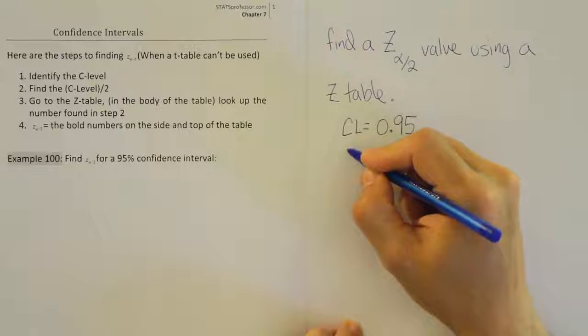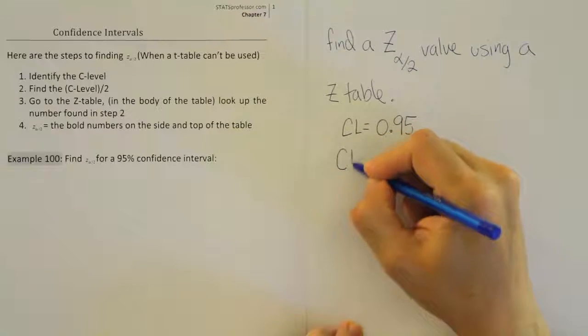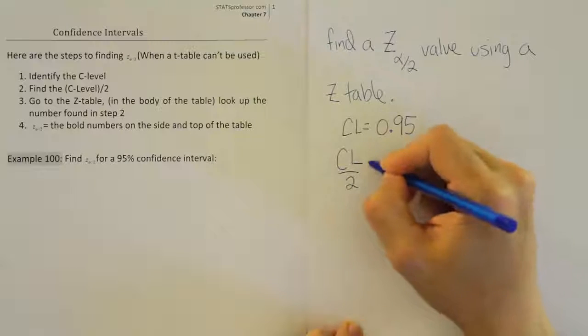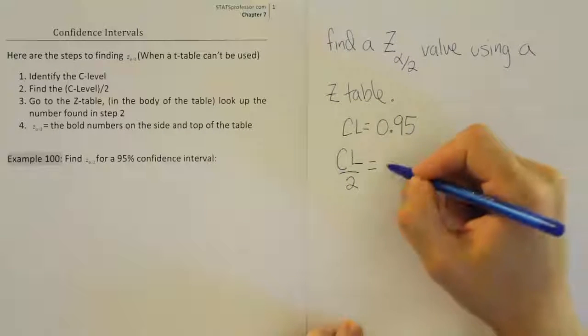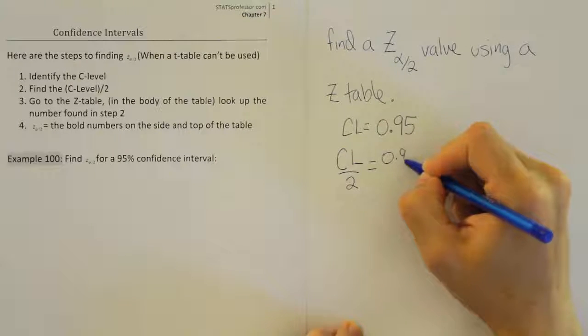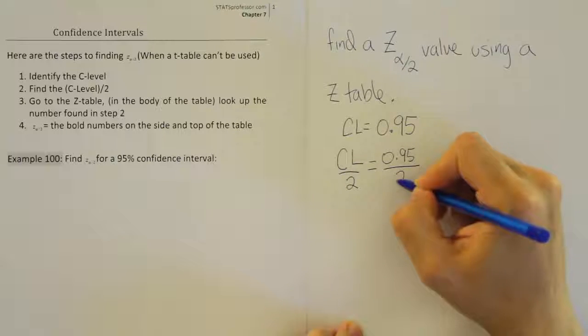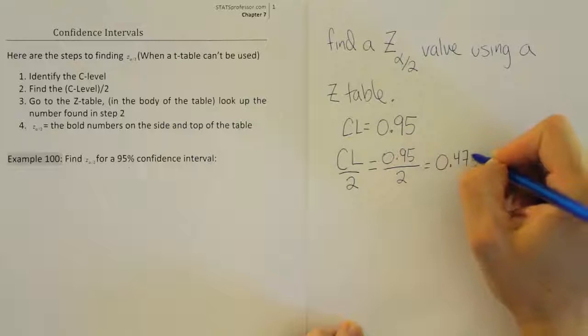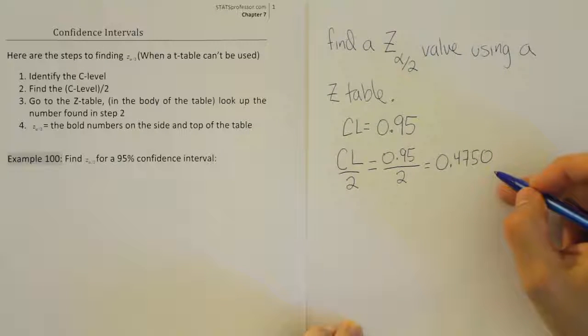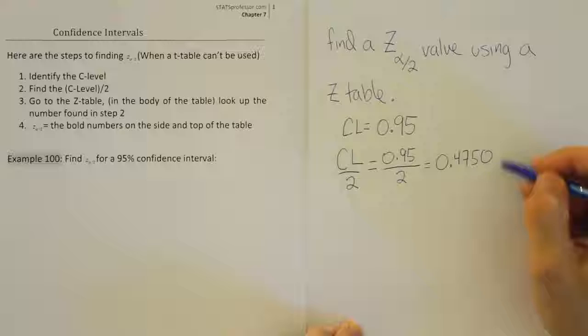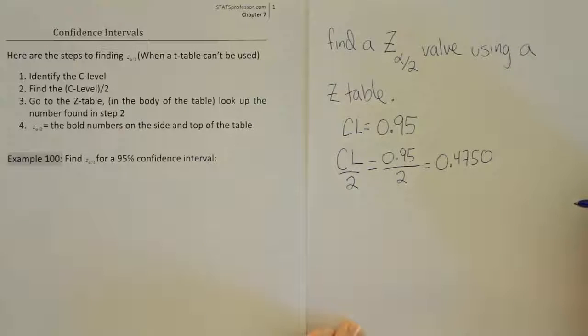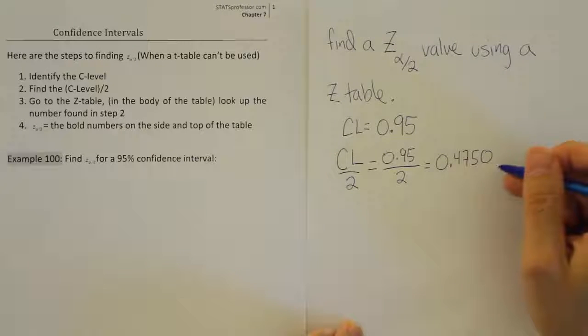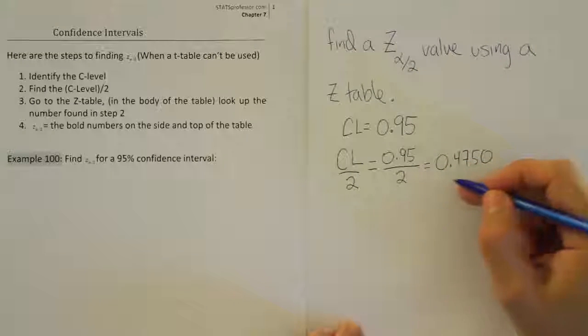The next step in the process is going to be to take that confidence level and divide it in half. So I'm just going to take half of 95. So 0.95 divided in half and that will give you 0.4750. So once you've divided 95% in half, you end up with 47.50% or 0.4750.